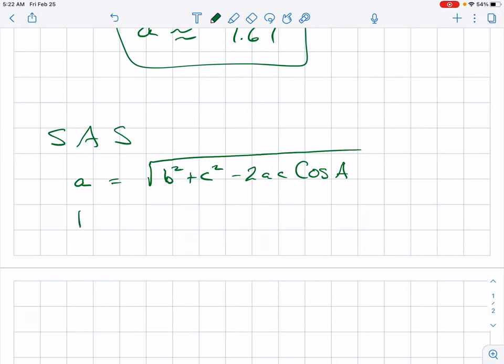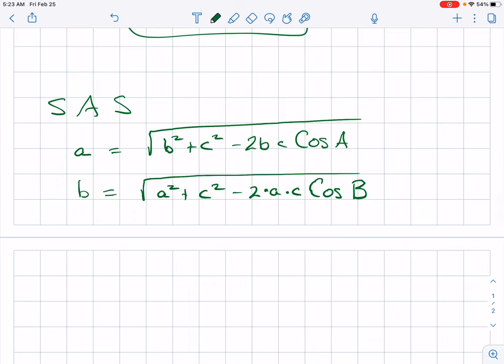And if you want to find little b, you're going to have a squared plus c squared. Oh, I messed up that first one, didn't I? My bad. Change that. And if we want to find c.